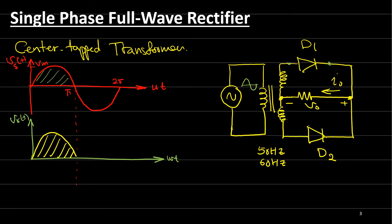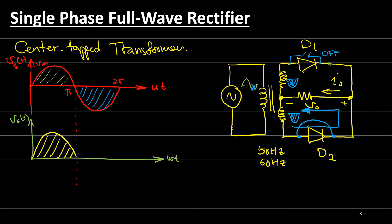When the input is in the negative half cycle, diode 1 will be off — open circuit — and diode 2 will be on, short circuit. The current flows through diode 2 to the load. Even though the input voltage is negative, the voltage across the load will still be positive.